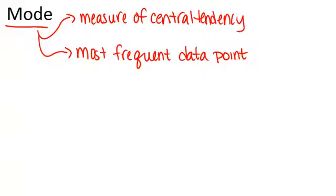If a data set has only one mode, that is only one number that appears most often, then it is called unimodal.